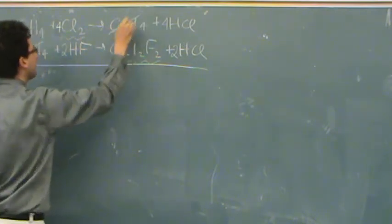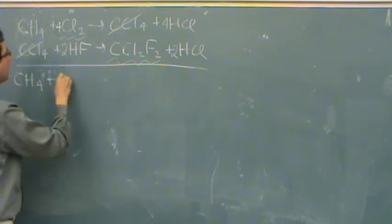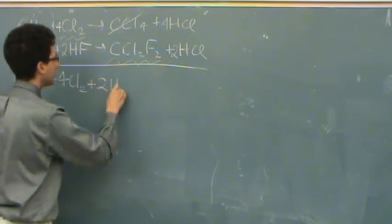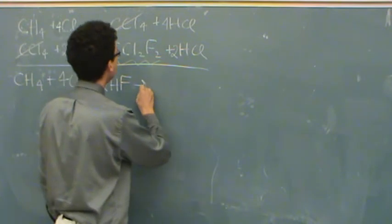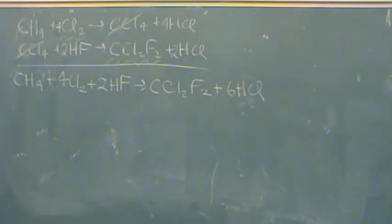When you're given simultaneous reactions, what you're going to notice is that you can add them up and certain things will cancel. So in this case, this thing is going to cancel. And I think that might be about it that cancels, but let's write the new reaction. CH4 plus 4Cl2 plus 2HF goes to CCl2F2 plus 6HCl. Okay, I don't think there's anything else that cancels, so this is what's called my overall reaction when what's called the intermediate cancels. So the thing that cancels is called the intermediate or the species.